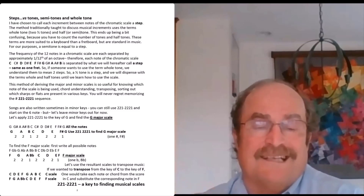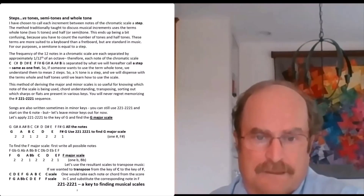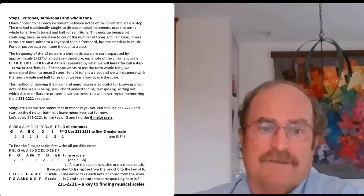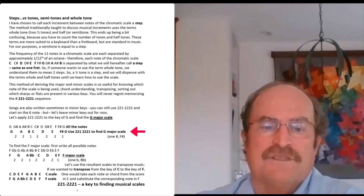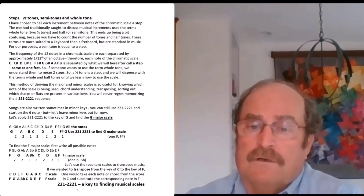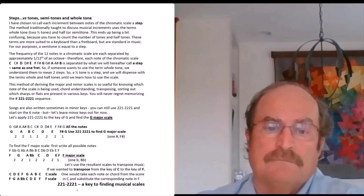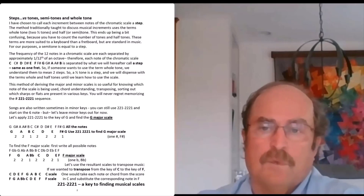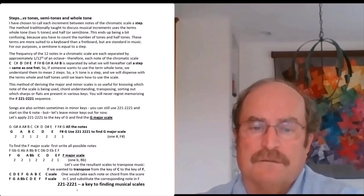If we wanted to write a minor scale, you don't have to learn a new number pattern. Write all the notes out — say for G — continue past G a little bit, then start on the sixth note: one, two, three, four, five, six. For G, the relative minor is E minor. If you start on the sixth note and use the pattern two-one-two-two-one-two-two in the same key, you write a minor scale — no need to do anything particularly different except start on the sixth note.